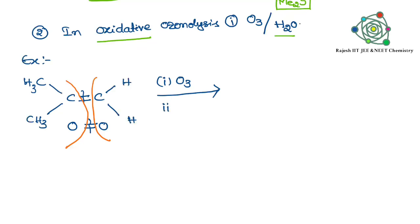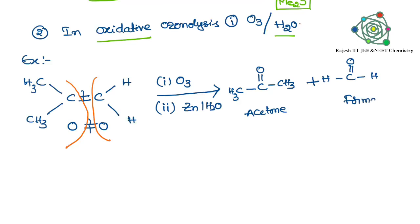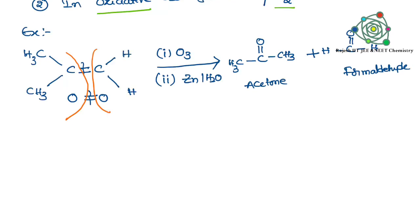This oxygen goes to the left hand side and this oxygen goes to the right hand side. Since we are using zinc, we can confidently say this is reductive Ozonolysis. We are getting two products here: acetone and formaldehyde. This is reductive Ozonolysis.